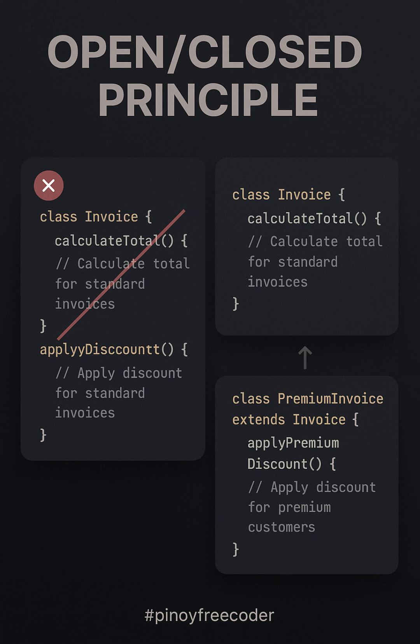On the right, we follow the Open or Closed Principle. Here, we add new functionality by extending the class using inheritance or an interface without touching the original code. This makes the class open for extension but closed for modification, allowing us to easily add new features while keeping the core code safe and intact. By following OCP, we can create code that's more flexible and maintainable, making it easier to scale and adapt in the future.